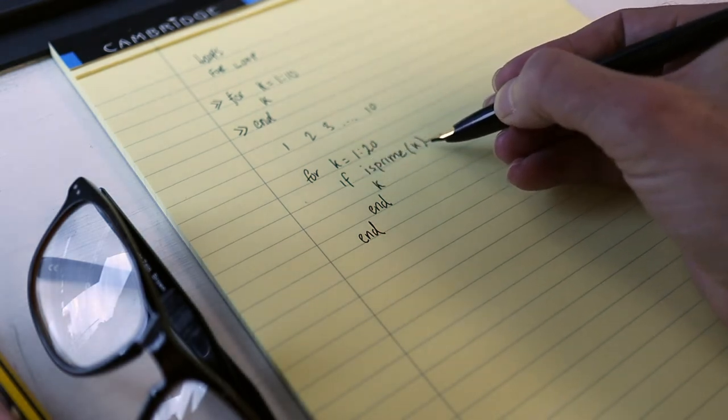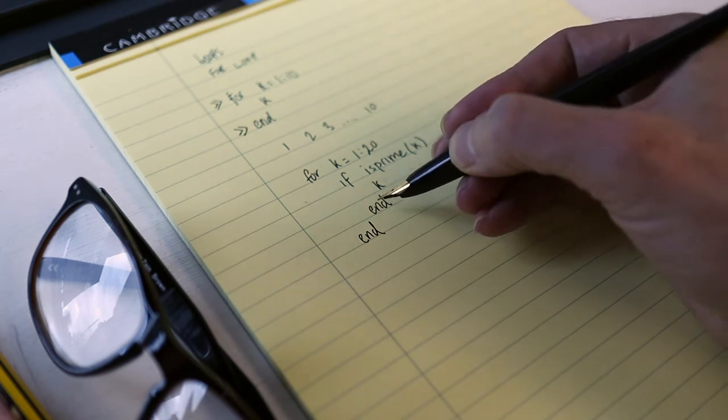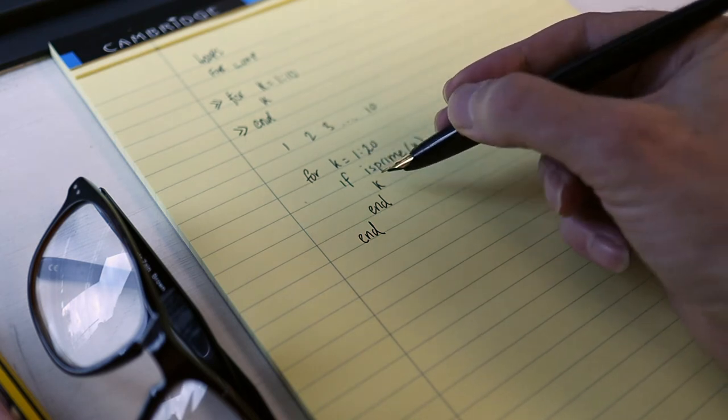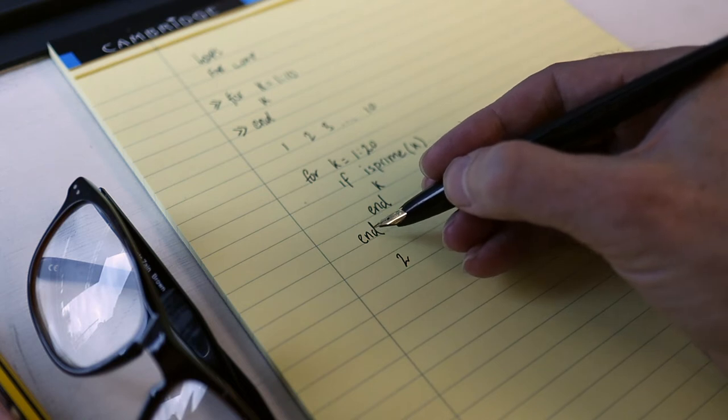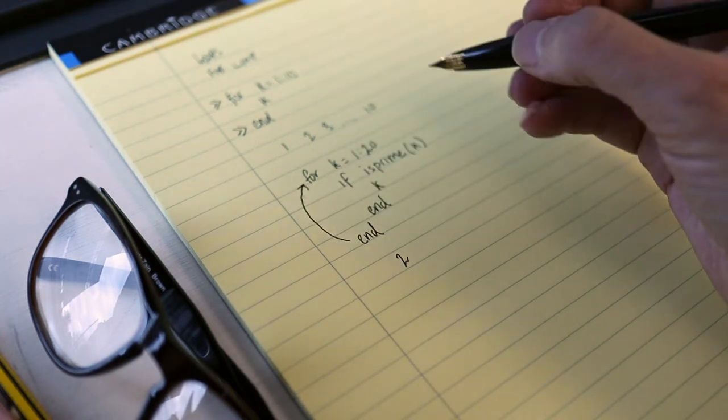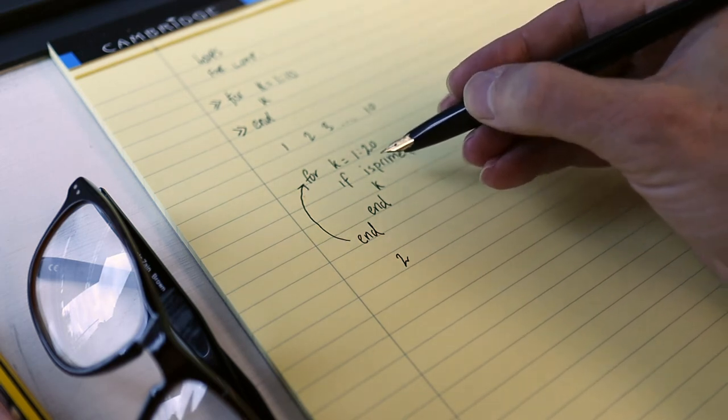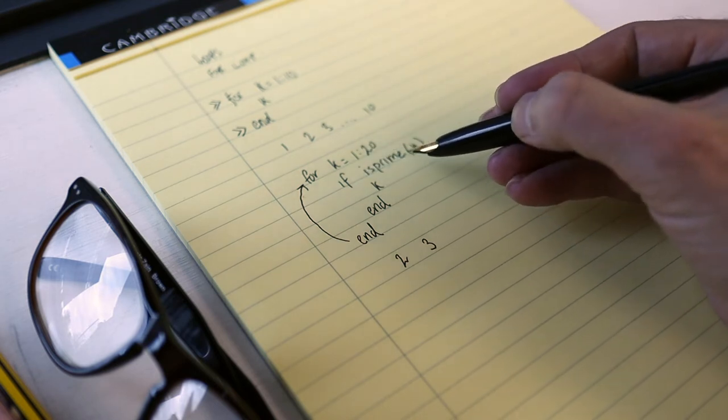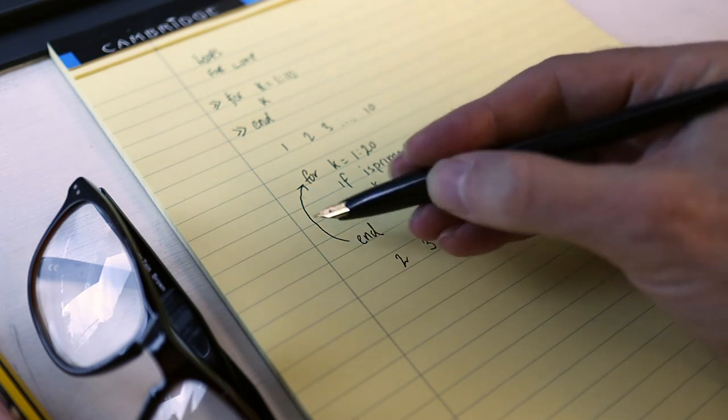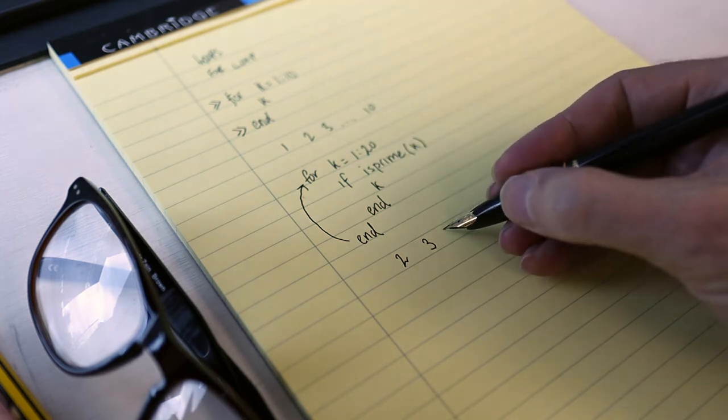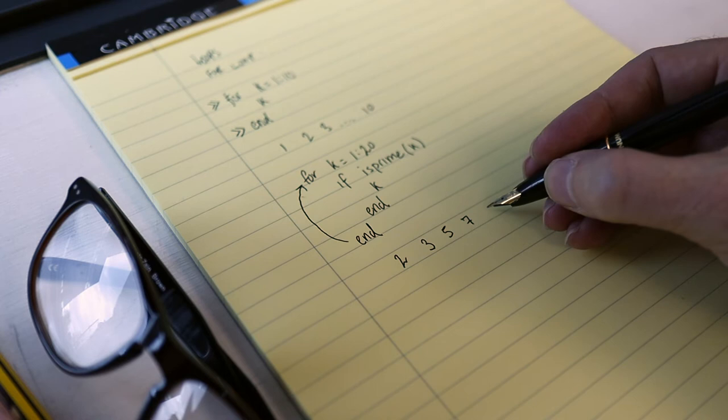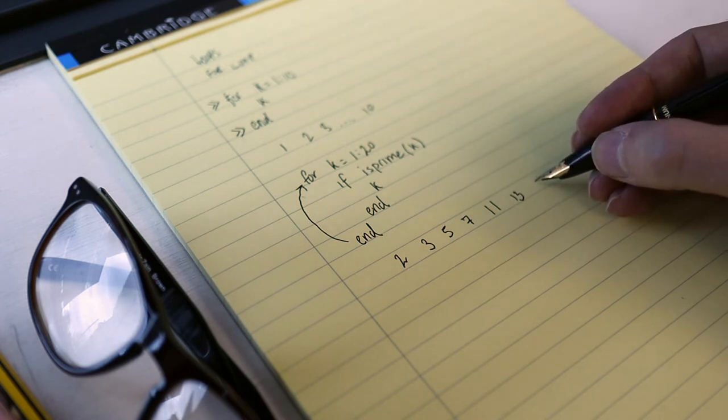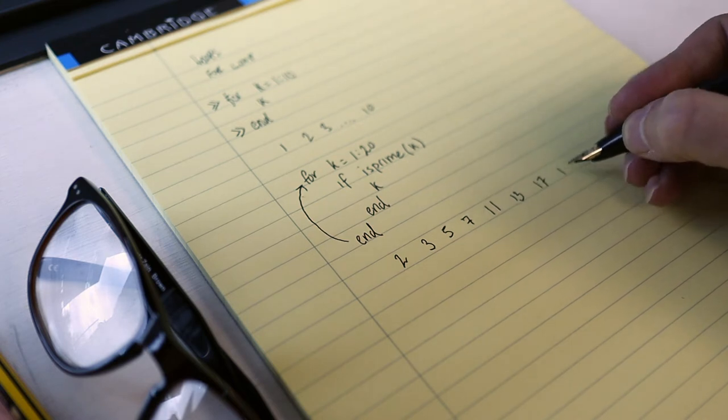And what's going to happen here is it's going to go through. It's going to set k to be 1. Is k 1 prime? No, it's not. So it'll go to end, and it'll go round again. End for k is 1 to 20, so now k is 2. Is 2 prime? Yes, it is. So output k. Now k is 3. If is prime 3. Yes, 3 is prime, so yes, I will do that. Increase k by 1 again, so k is 4. Is 4 prime? No, it's not. So I skip that. K is 5. Is it prime? Yes, it is. So it'll output it. And it'll keep doing that. Every time it comes across a prime number, it'll print it. And every time it comes across a non-prime number, it'll skip and move on to the next one. And you'll get an output like that.